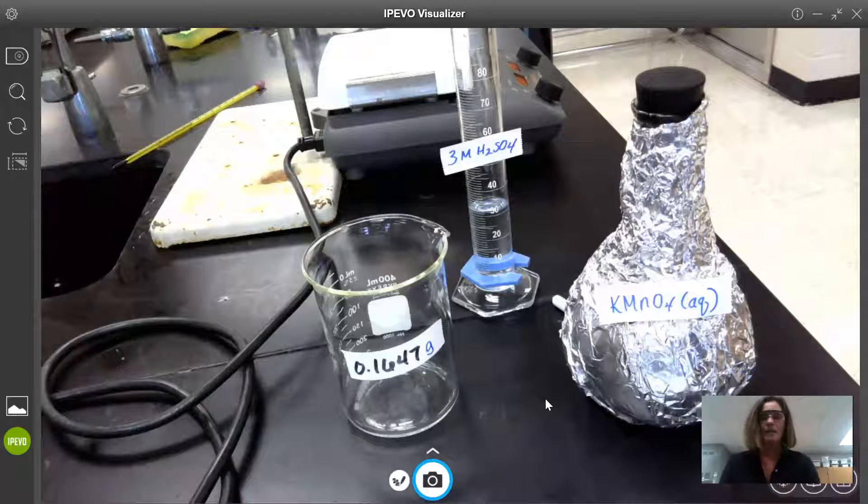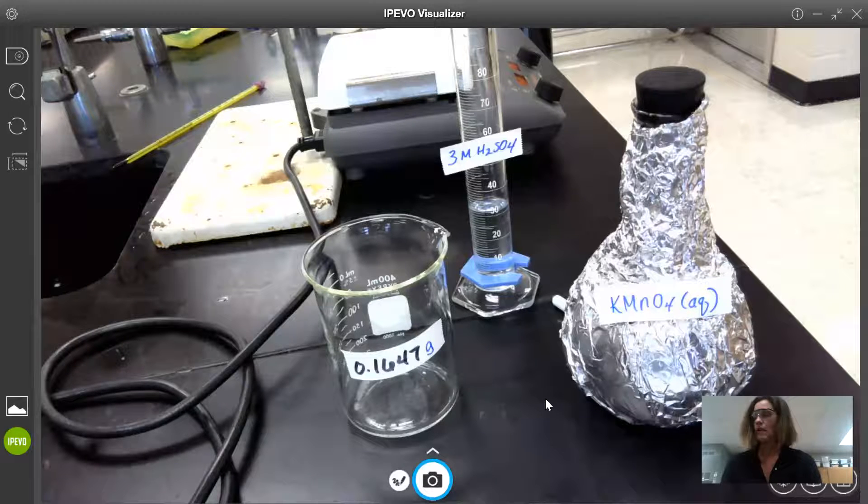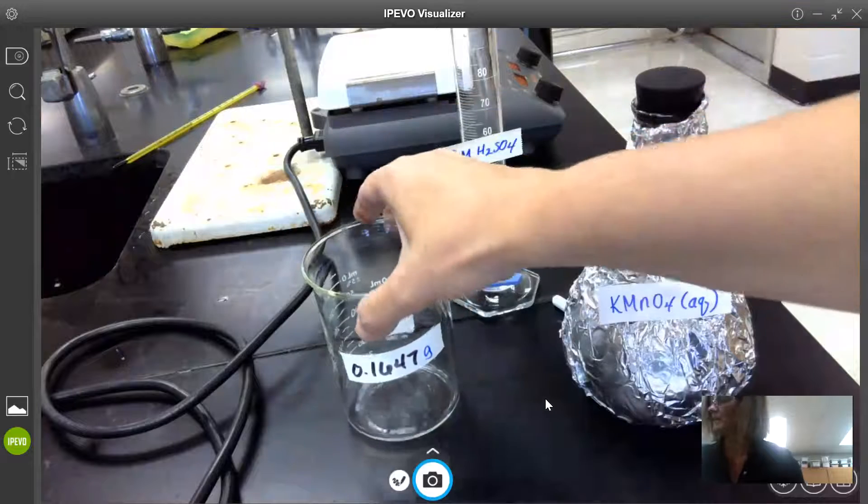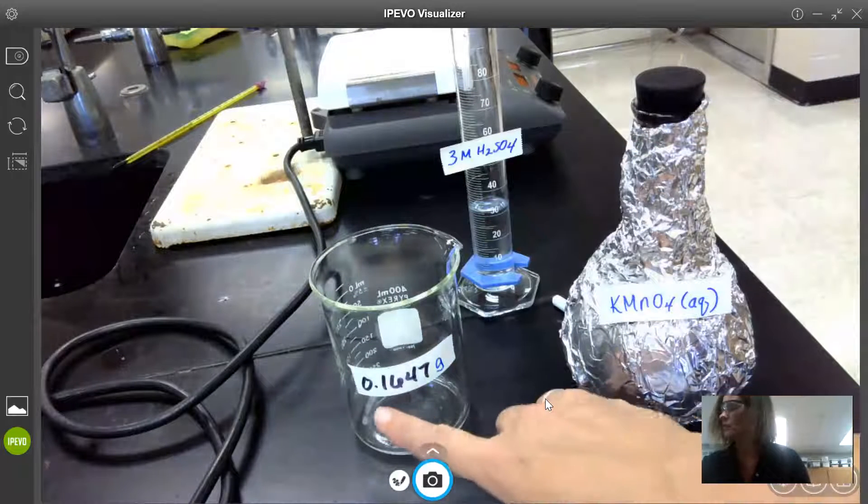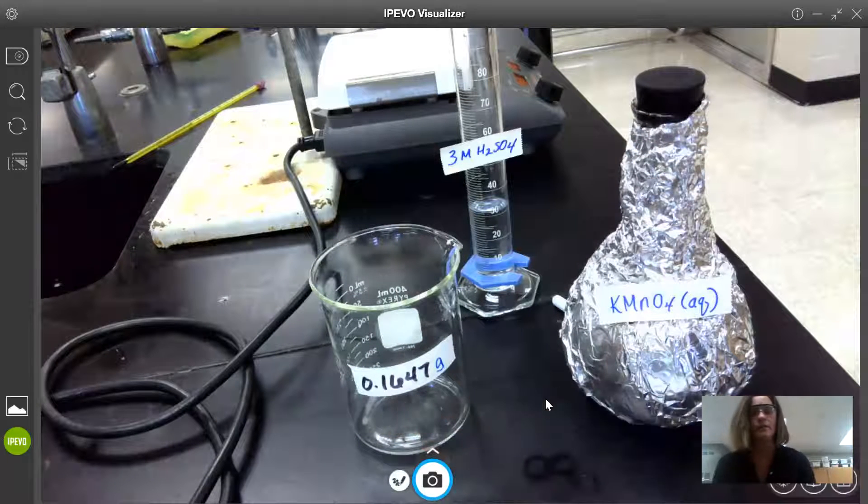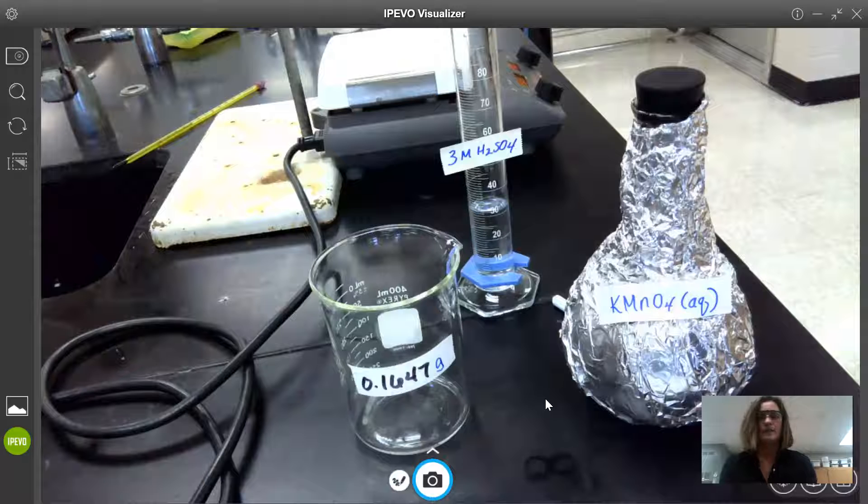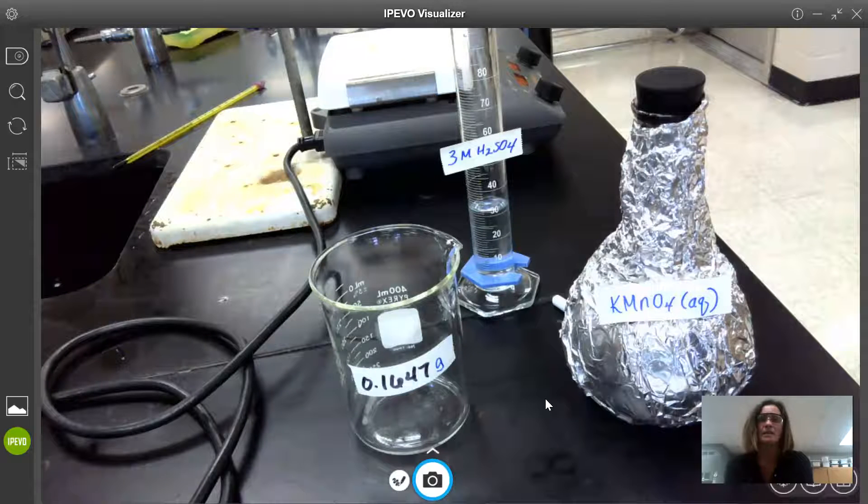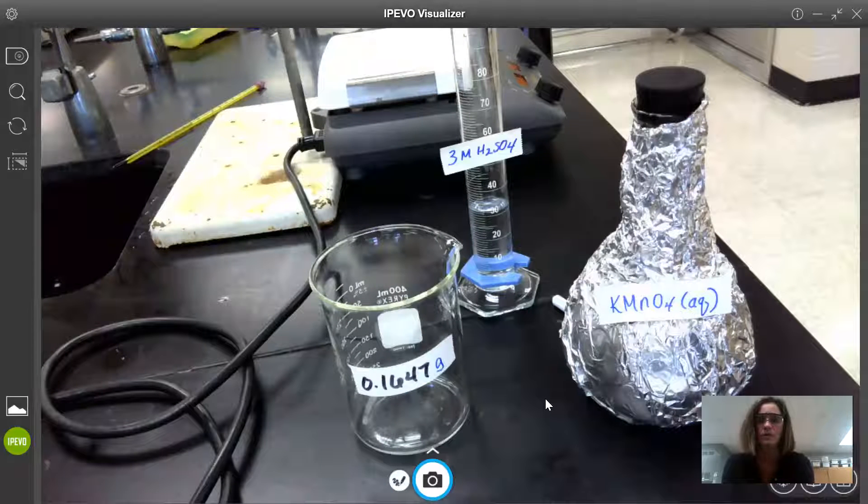So the sodium oxalate was measured out using the analytical balance and the mass I used was 0.1647 grams. I decided to use this amount based on calculation number two from your redox titration lab.